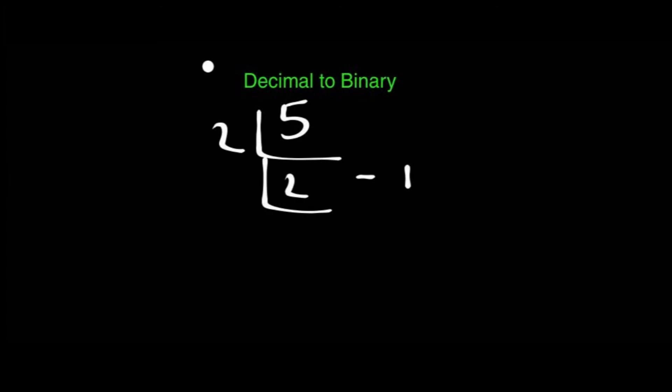You just need to write the remainder on the right hand side. This is important. Now again, I am dividing the quotient 2 by 2. When dividing 2 by 2, 2 into 1 is 2, so I have got a quotient of 1. Since there is no remainder, I am writing 0 as the remainder on the right hand side. Now, as you can see, the quotient is 1, so you can stop here.